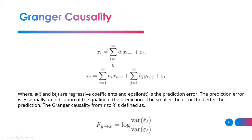Another way to look at this is by examining the variance of the error terms from the two equations. If the history of Y is not adding any significant information, the variance of the first equation will be equivalent to the second, giving a ratio of 1 and a log of 0. If the second equation provides more information, you get a specific value and can measure how much X affects Y and how much Y affects X.